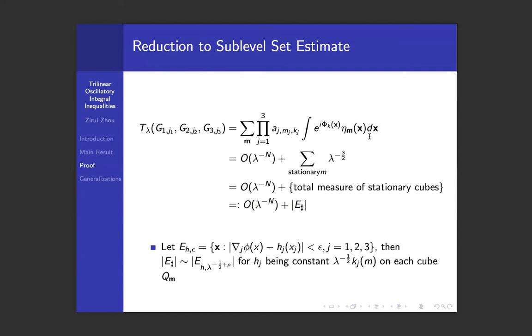Again, we use the same criteria for stationary cubes and non-stationary cubes. And we see that this sum will be bounded by the summation over measures of the stationary cubes. The remaining non-stationary cubes contributes a very small part to this trilinear form.